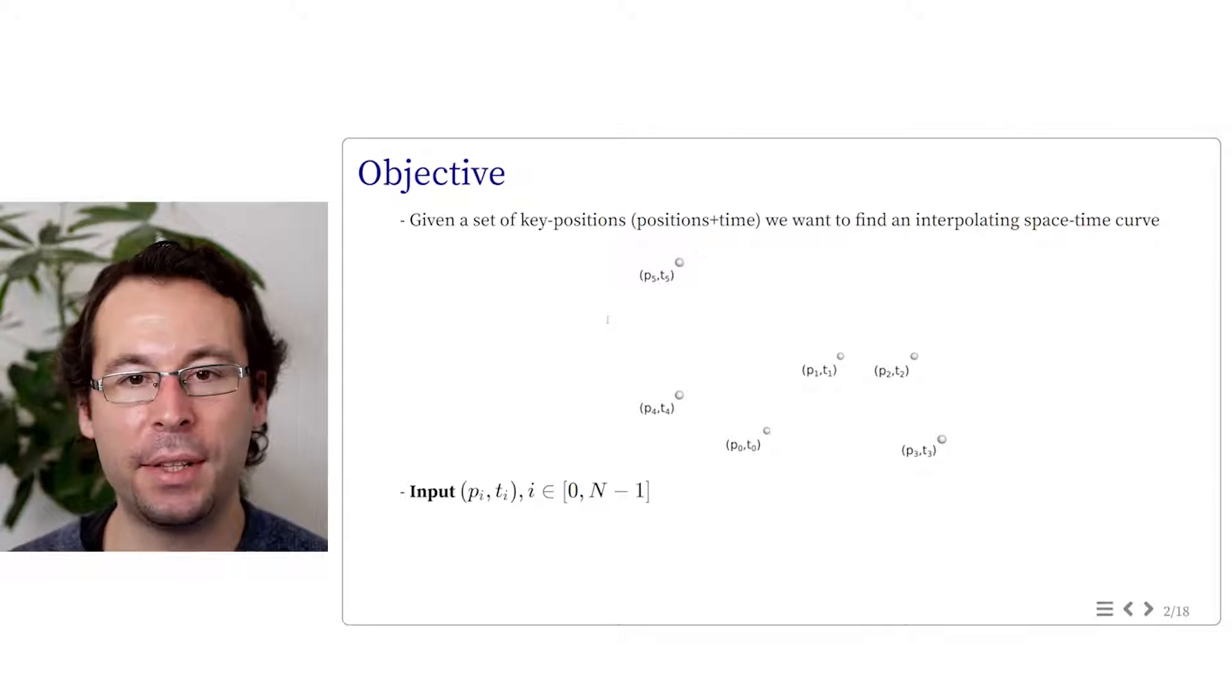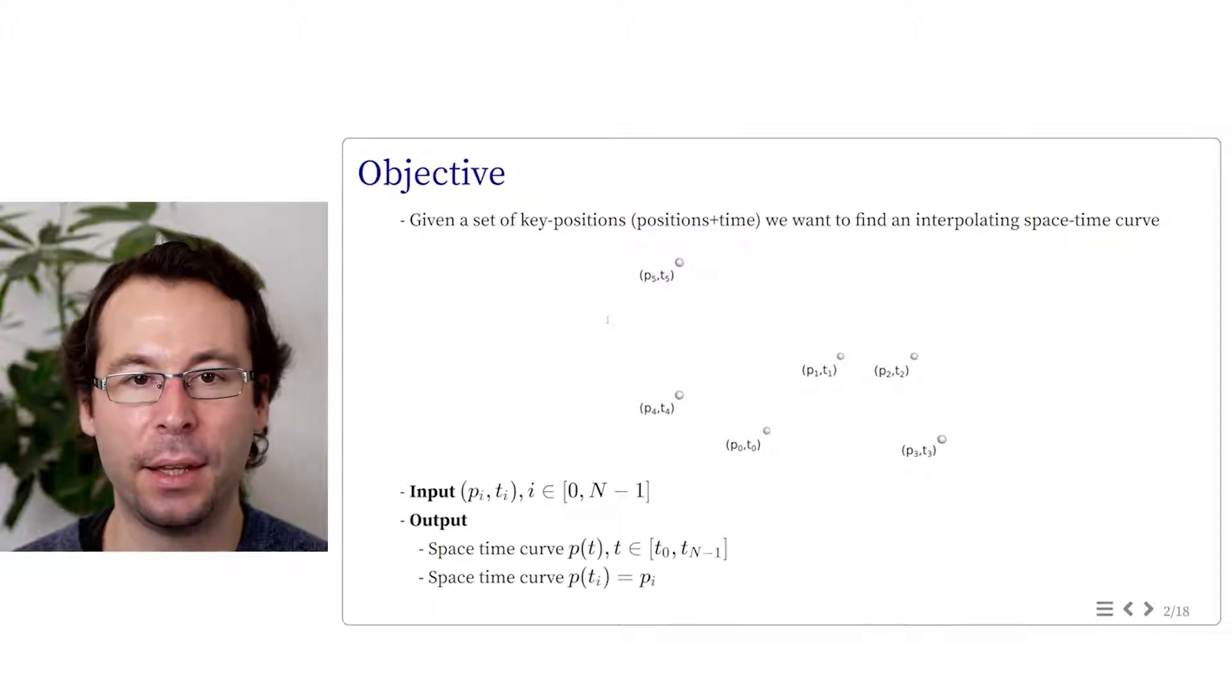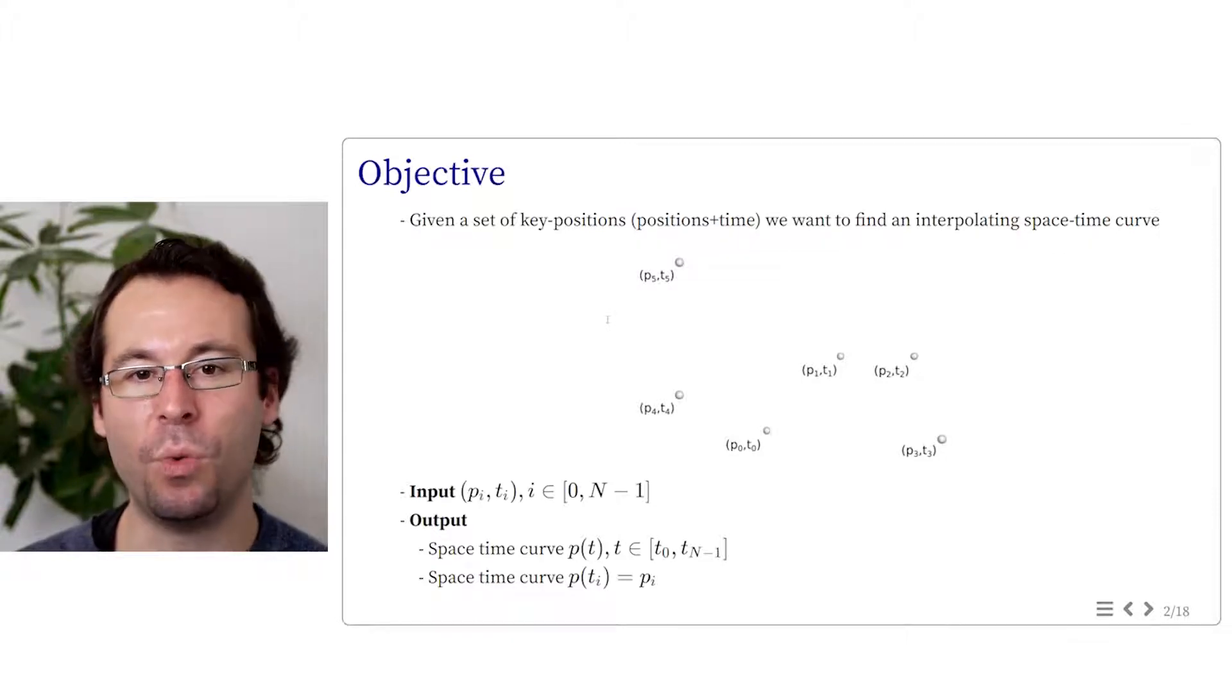We have as input a set of pairs, pi and ti, corresponding to the position and time of the key. And we are looking for a spacetime curve p such that p at ti equals pi. So what can be the simplest solution to such problem?